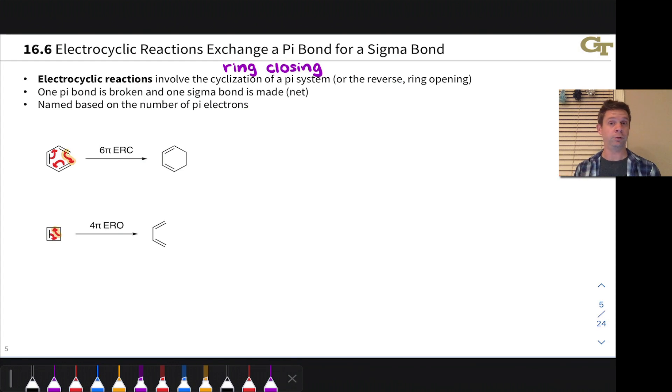Now, both of these are reversible processes. For example, this six-membered ring could reopen back to the hexatriene system. This butadiene could hypothetically close to this four-membered cyclobutene ring. And in thinking about which side is favored, we want to consider things like ring strain, bonds made and broken, and that sort of thing.